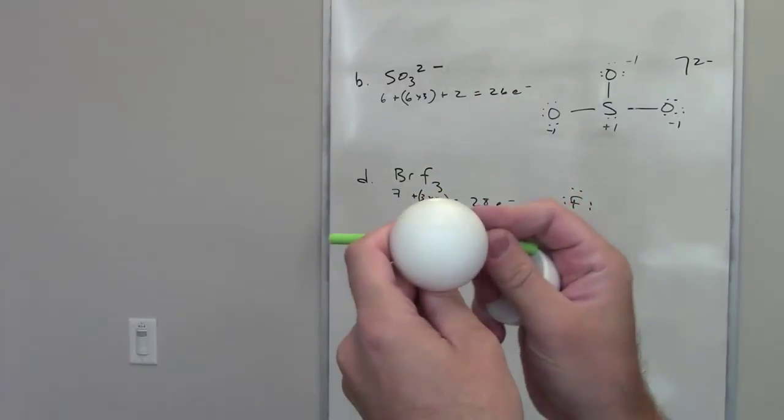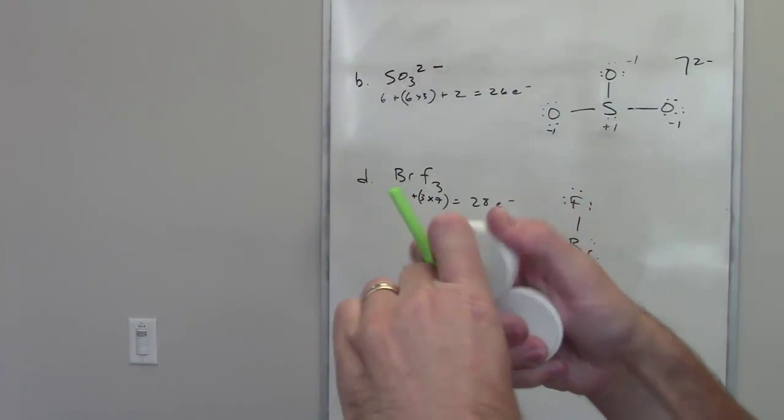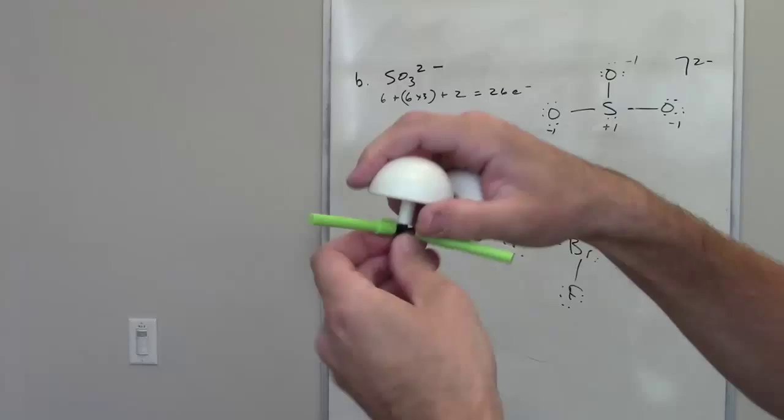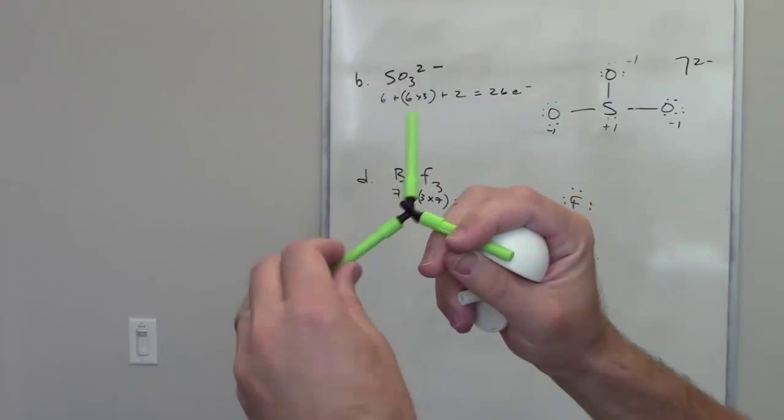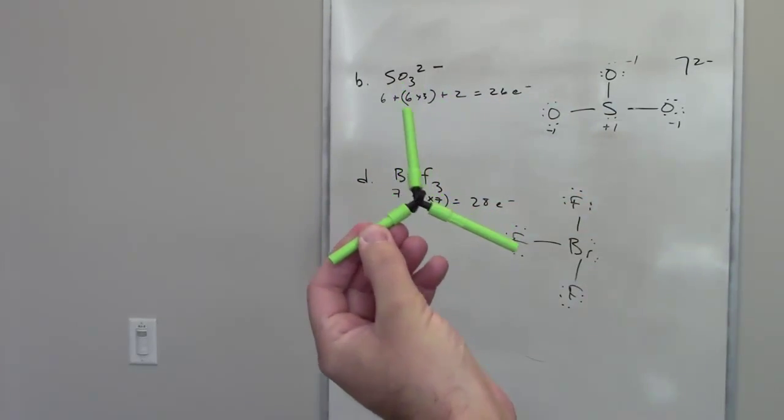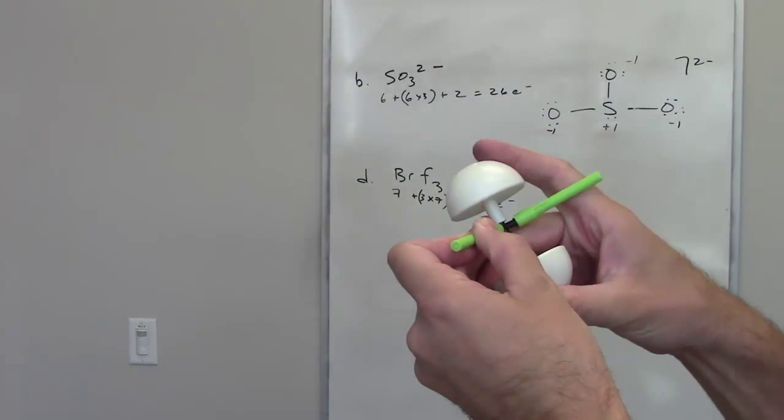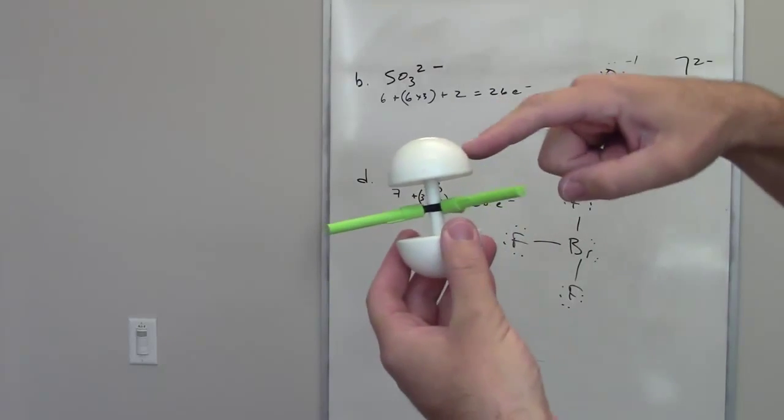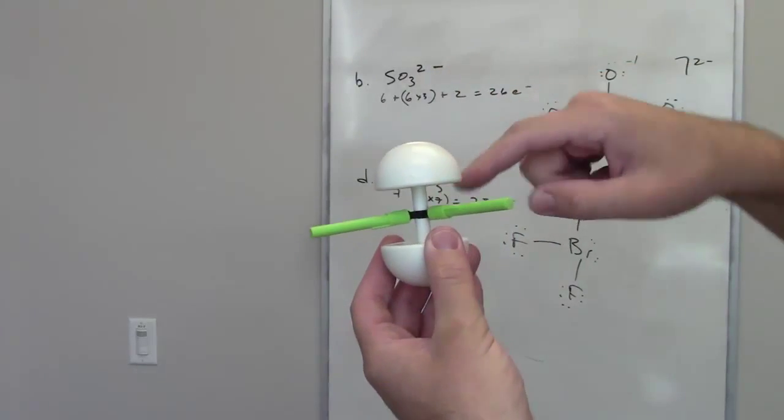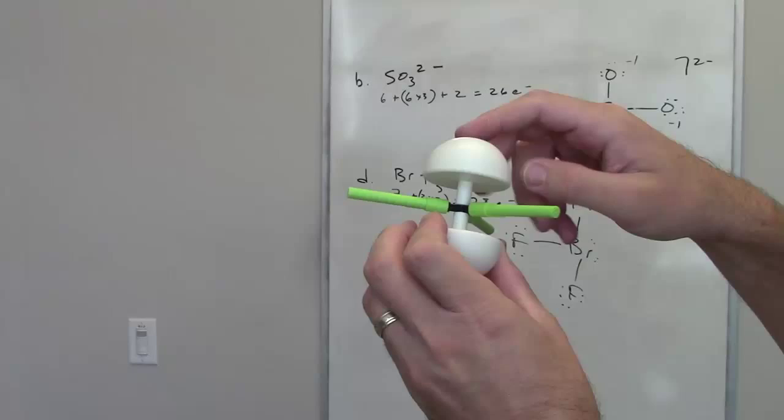You might imagine a couple other ways we could do it. You could imagine, for example, the three fluorines all being in a trigonal plane. So I'll show you that right there. If they're all on the same plane, they're 120 degrees apart. And then these lone pairs would be right here, and they would be 90 degrees away from each of the fluorines and 180 degrees apart from each other.